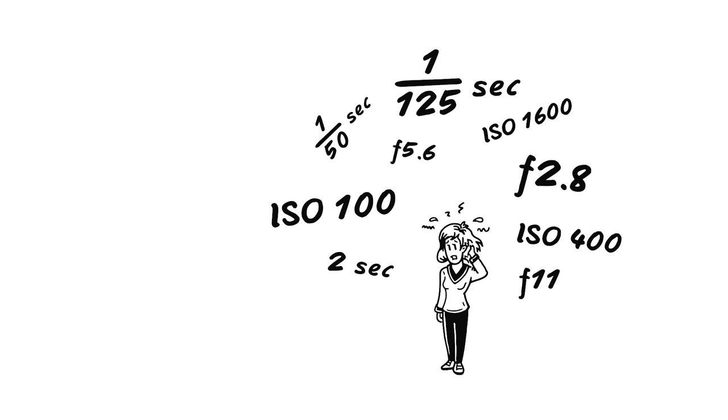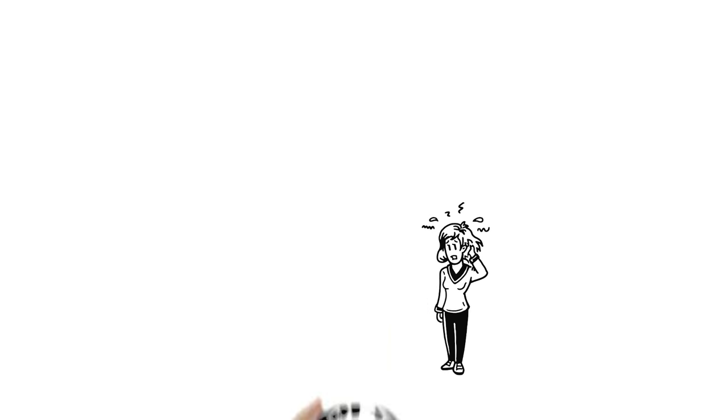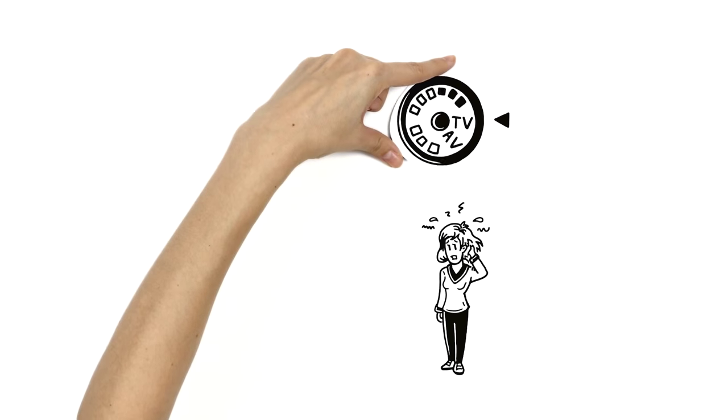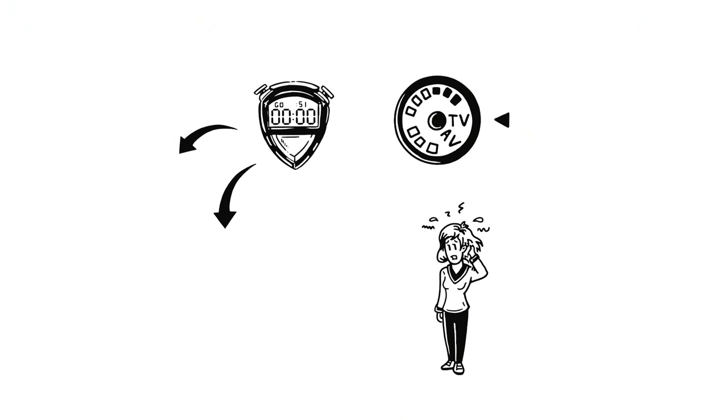Mary is overwhelmed. Fortunately, she doesn't have to do everything manually to take pretty pictures. In semi-automatic mode, Mary specifies just one value. The camera figures out the rest.